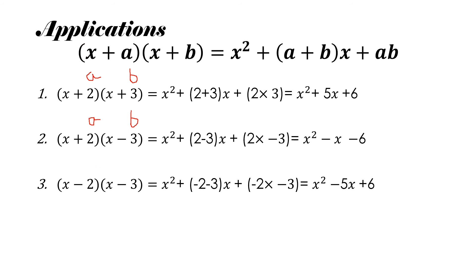In the next example, both a and b are negative: a is minus 2 and b is minus 3. The first term is the square of the variable, x square. Then we add a plus b: minus 2 plus minus 3 into x gives minus 5x. Then ab is minus 2 into minus 3, which is plus 6. So the solution is x square minus 5x plus 6.